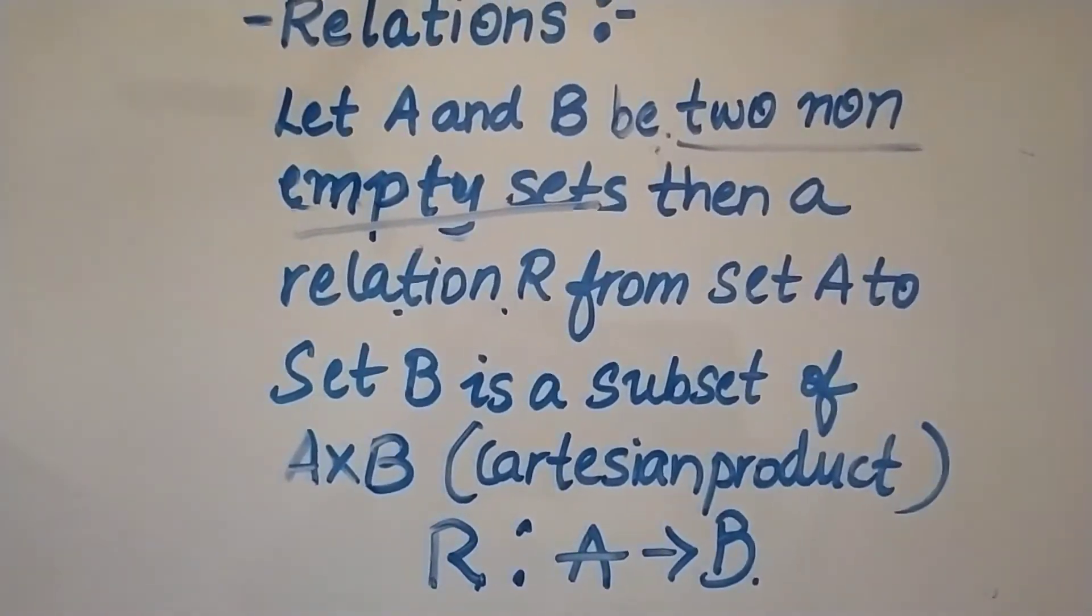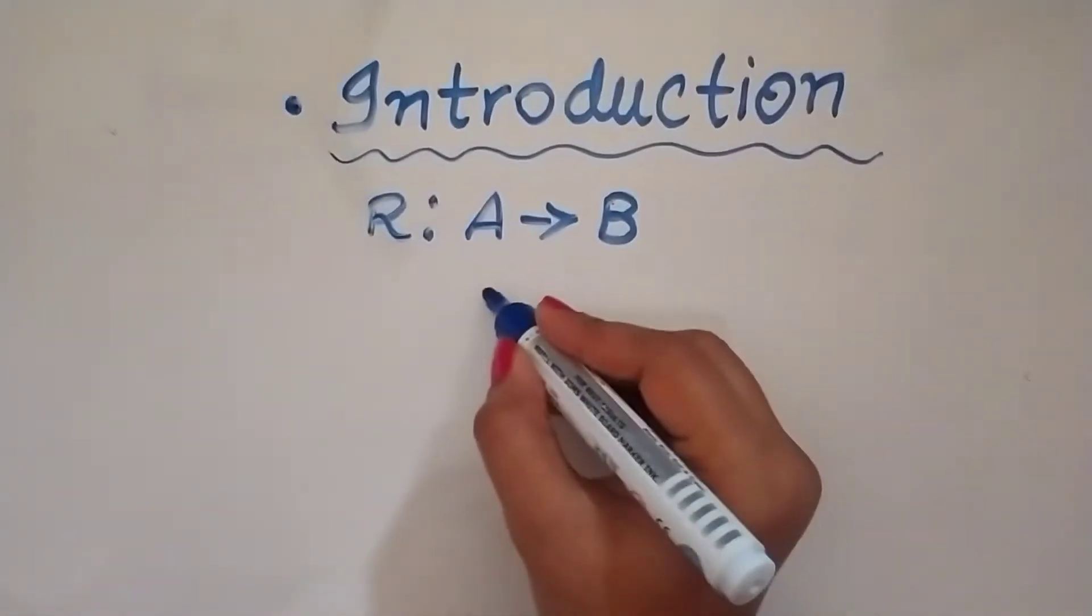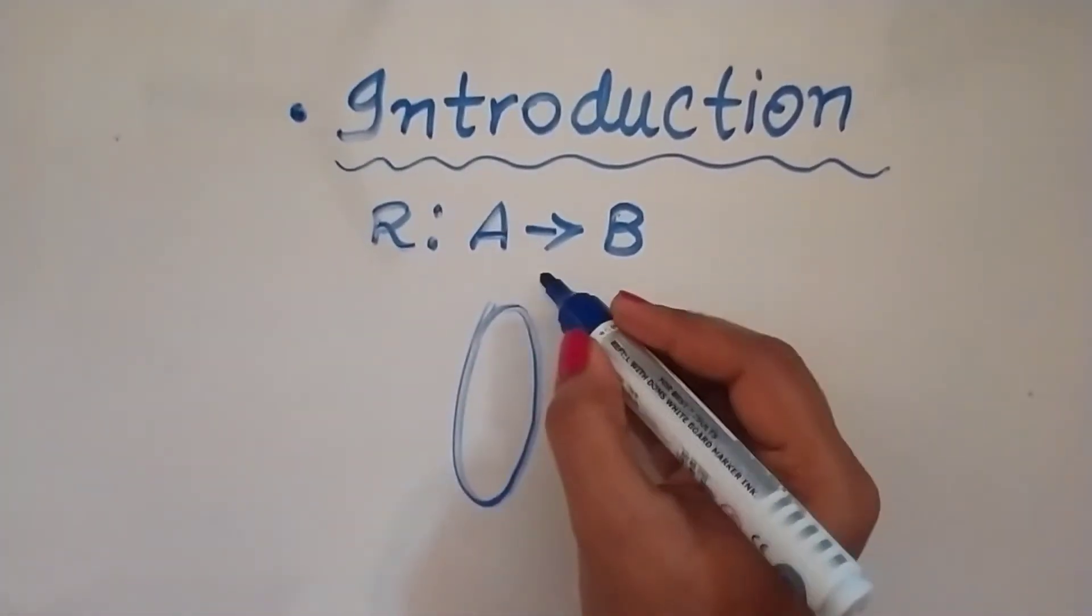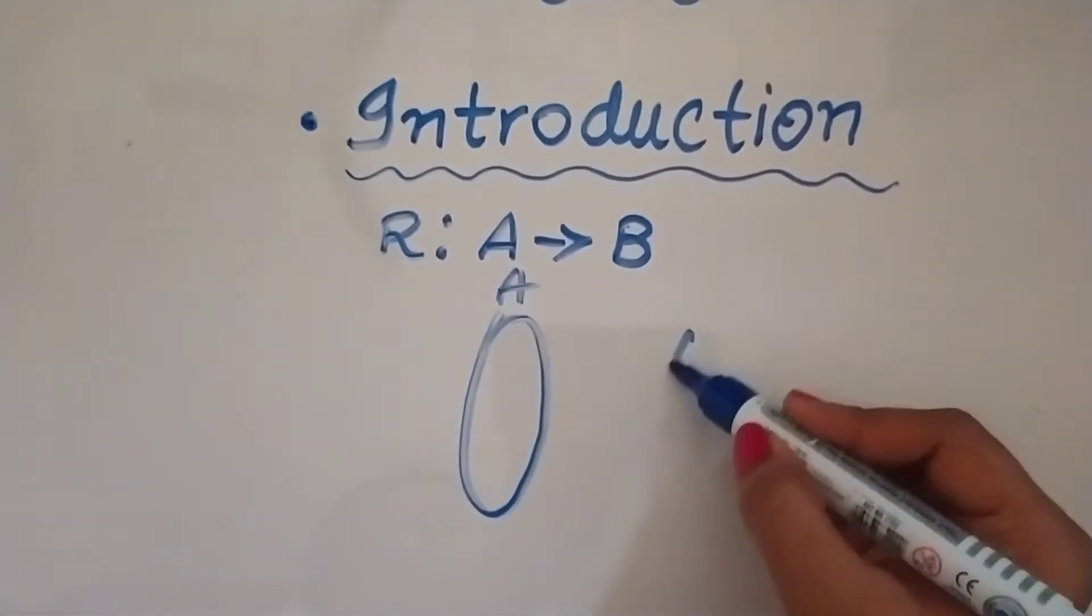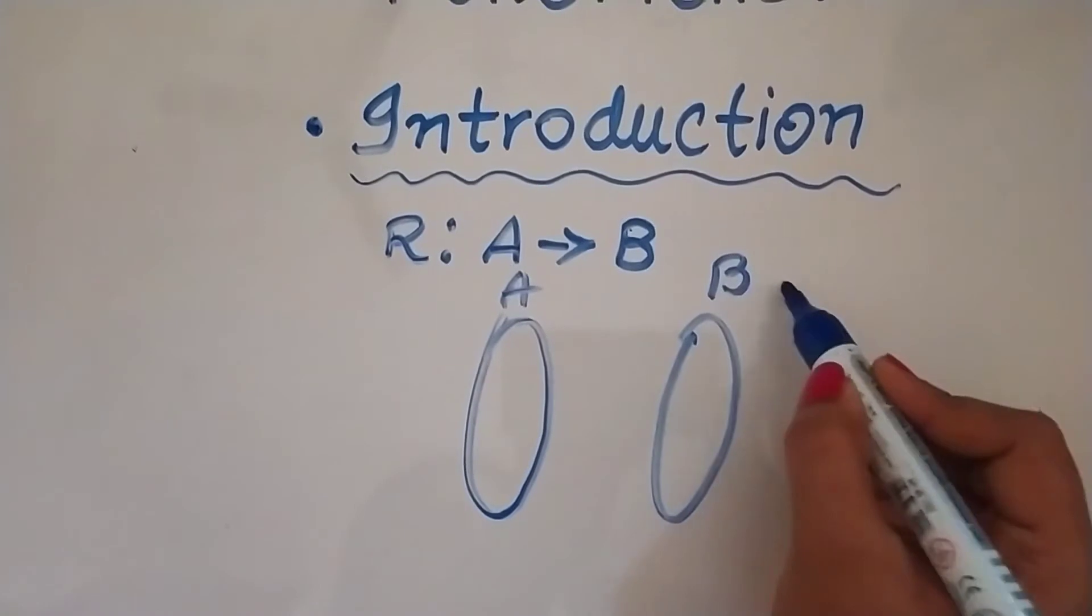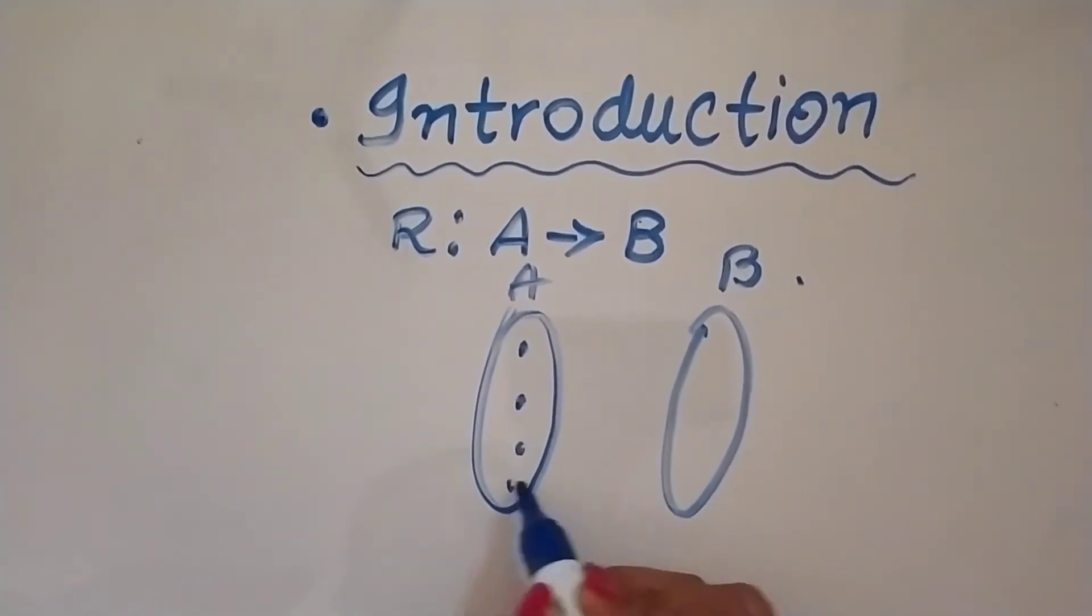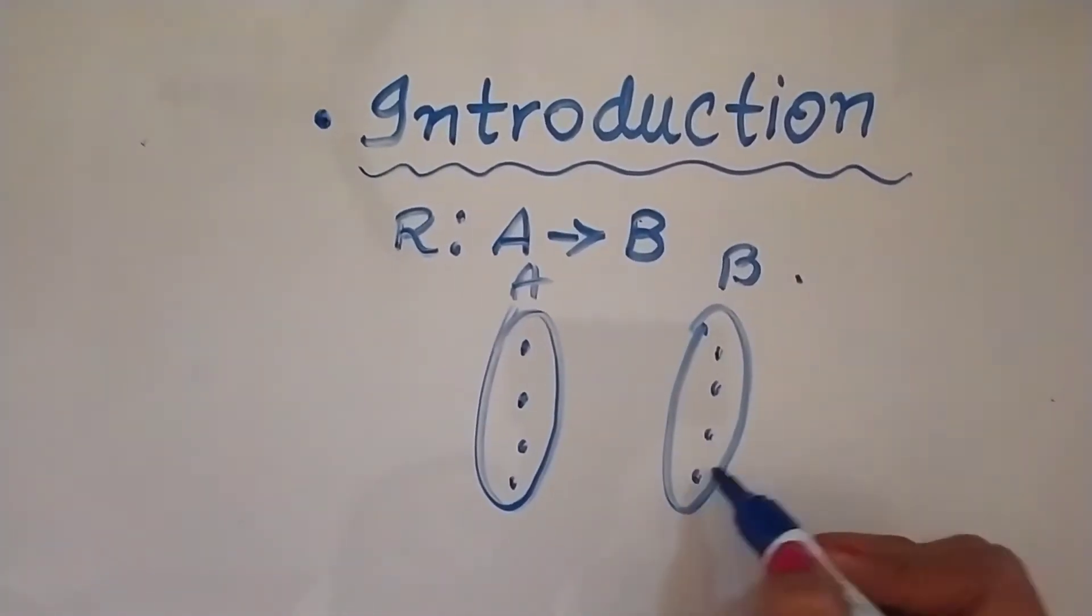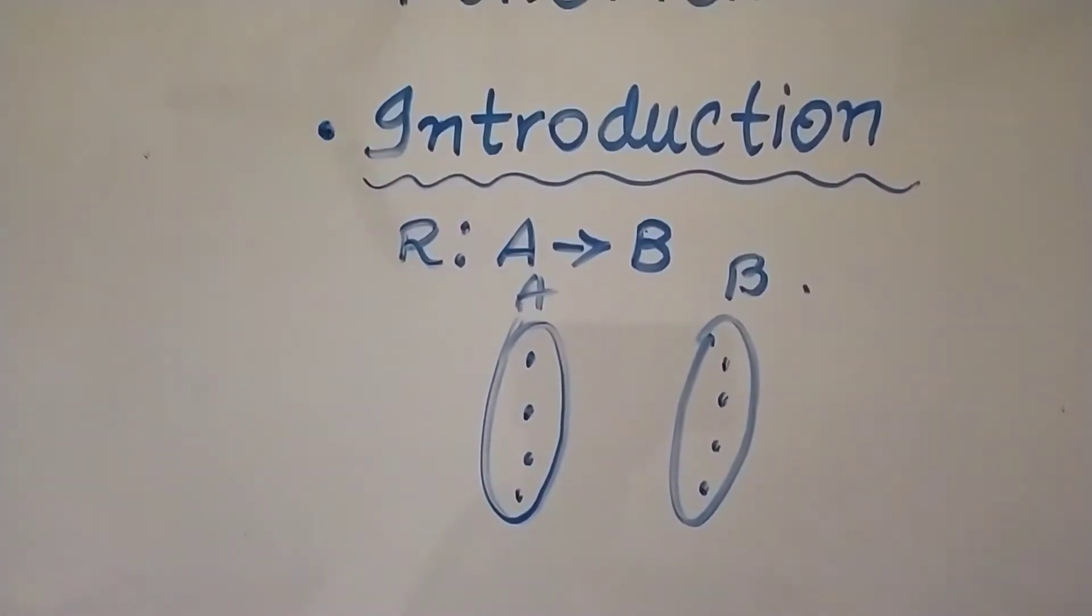Now what does this mean? When I take the set A, let this be set A and this be set B. The ordered pairs which we make in Cartesian product - that is this.